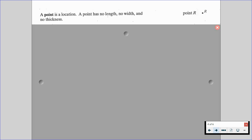So we have a point. A point is a location. It has no length, no width, and no thickness. Notice how we have a capital letter with our point. So this would be called point R.